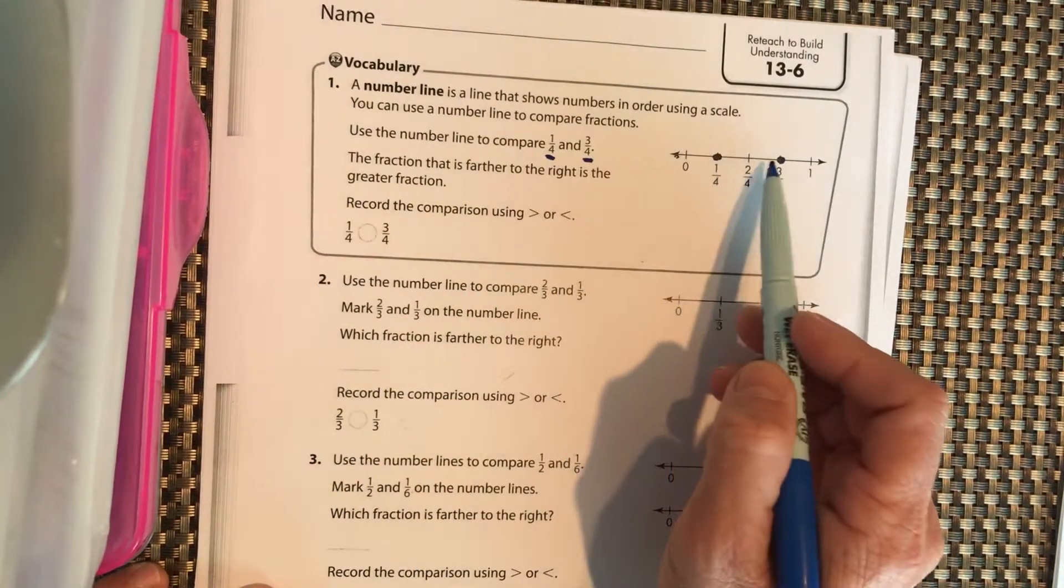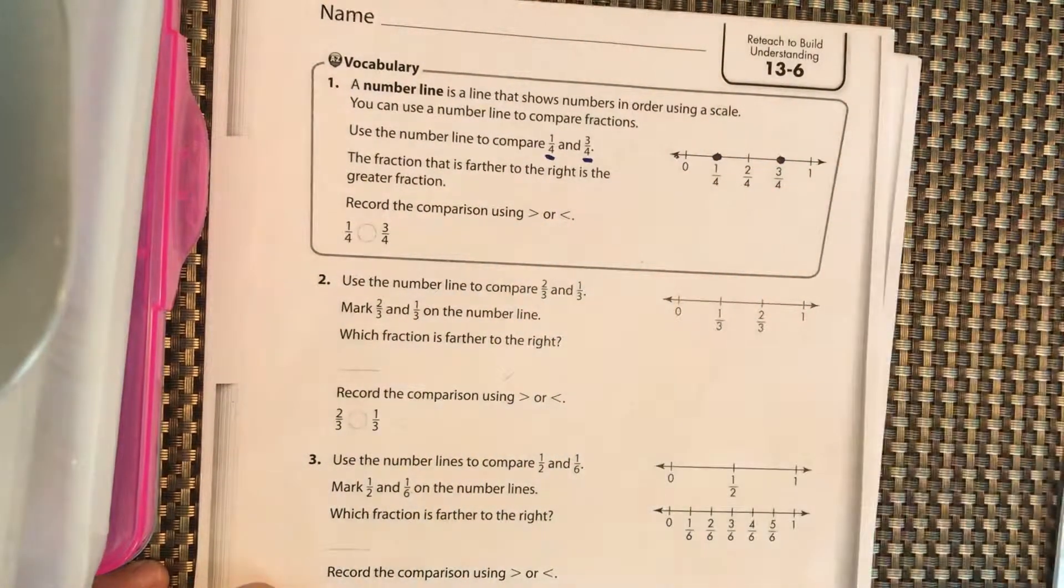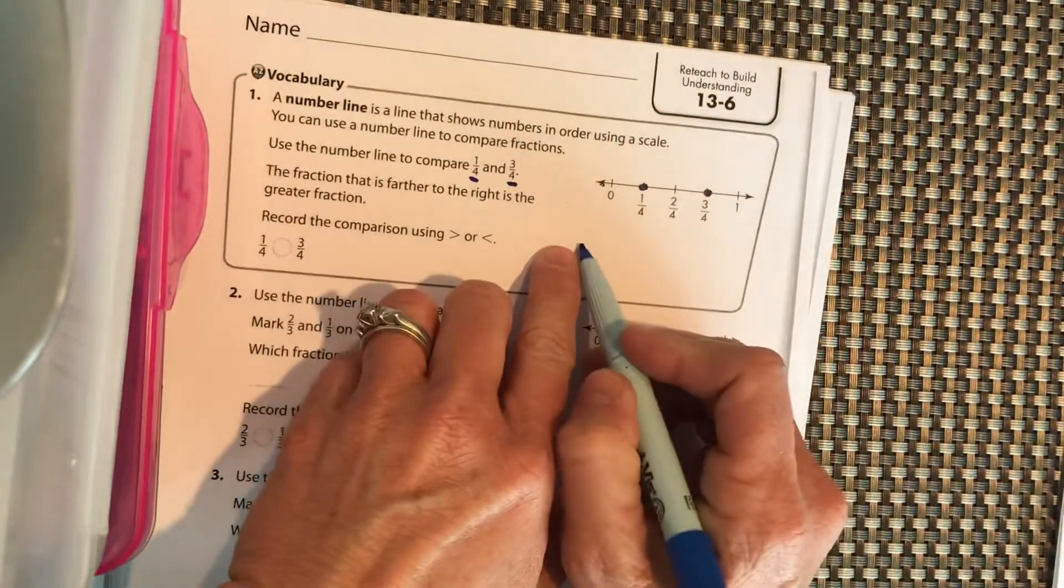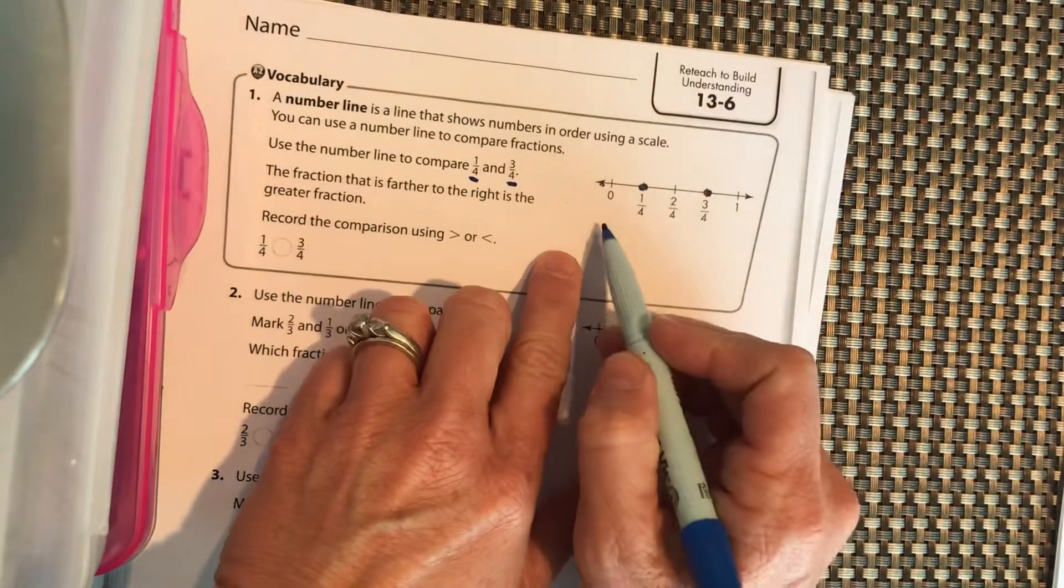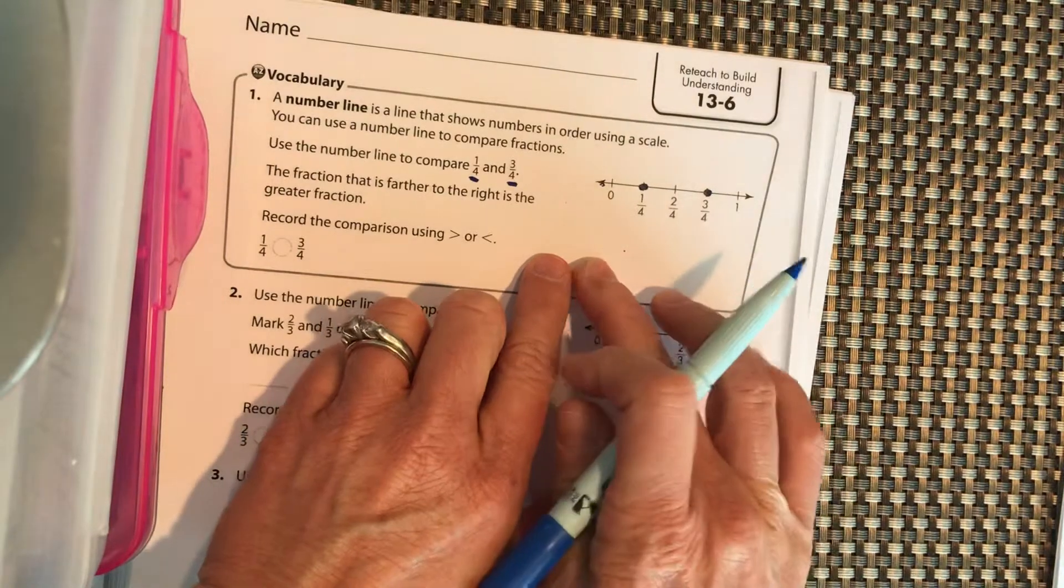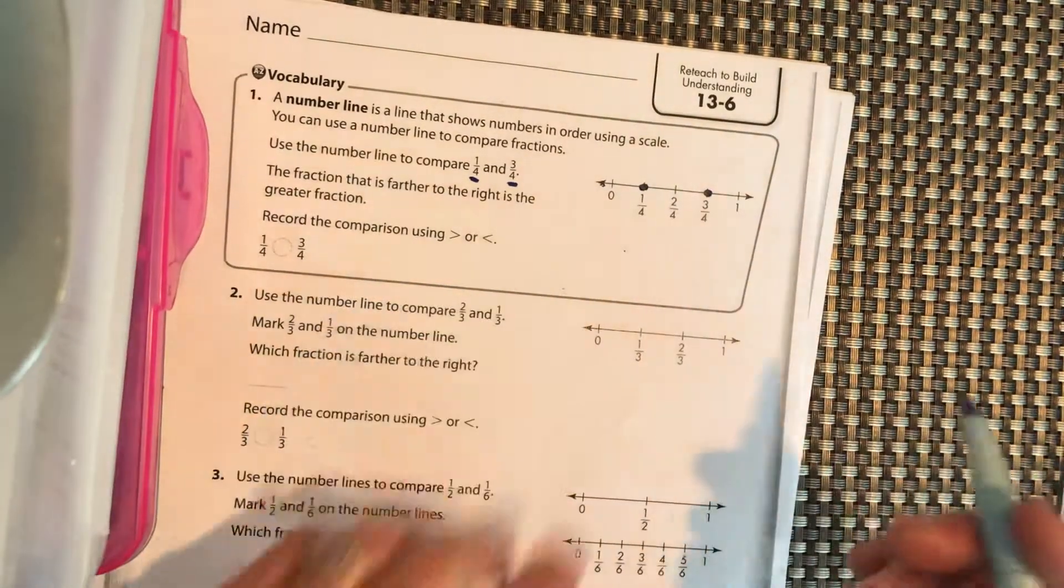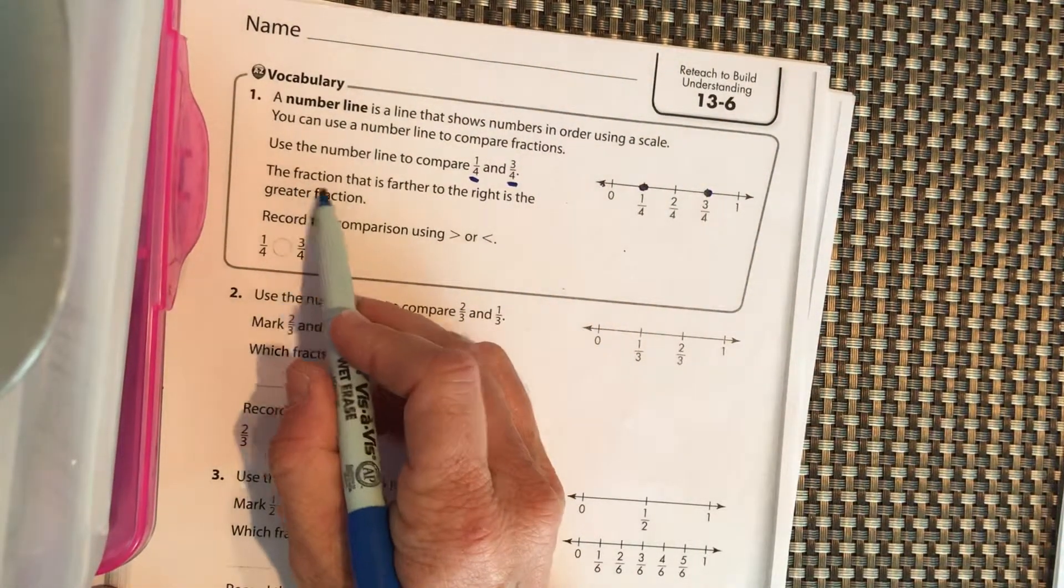The fraction that is further to the right, as you move to the right you get bigger and bigger, just like when we read, we start over here and we go that way. Just like when we count 1, 2, 3, 4, 5. So as we move to the right we get bigger and bigger.